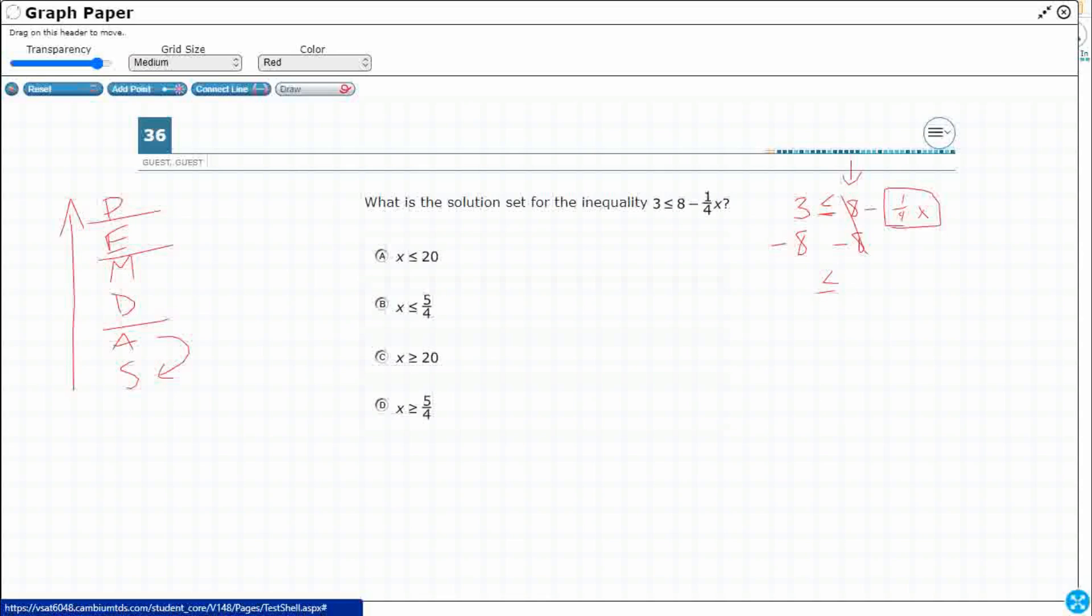8 minus 8 is 0, right? So we can just get rid of that. It's going to end up being negative 1/4 x. 3 minus 8, well, that's going to get you into a negative 5.